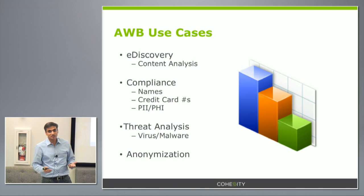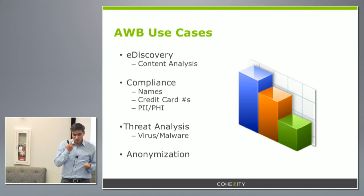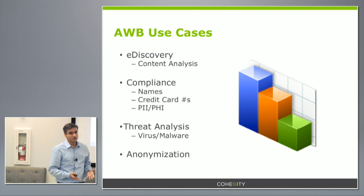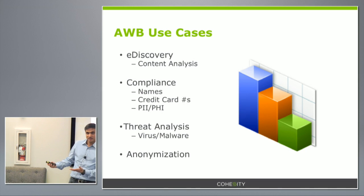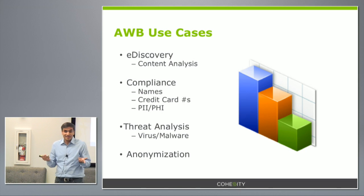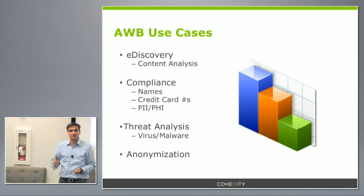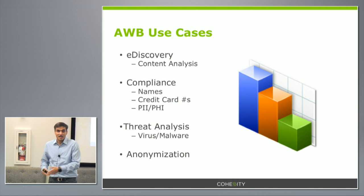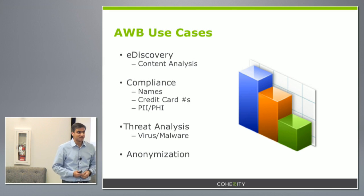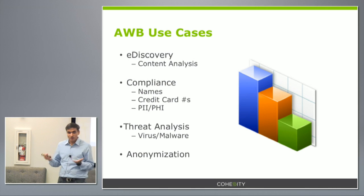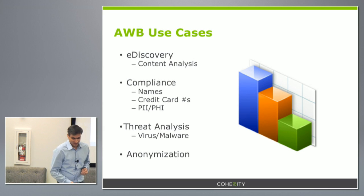Anonymization is something Google uses extensively. Google's raw search data has all kinds of personal information, so they write a MapReduce pipeline — essentially an AWB app — to read all that data, scrub personal information, anonymize the logs, and make them available to data miners and machine learning experts. There is no reason why enterprises cannot do the same with their secondary data using Cohesity.